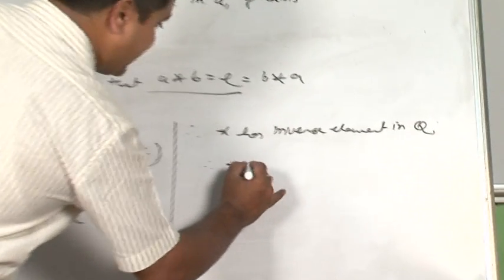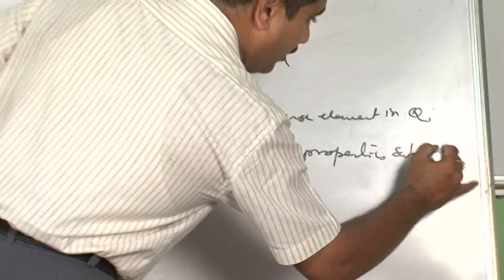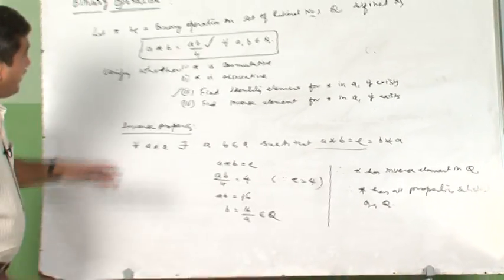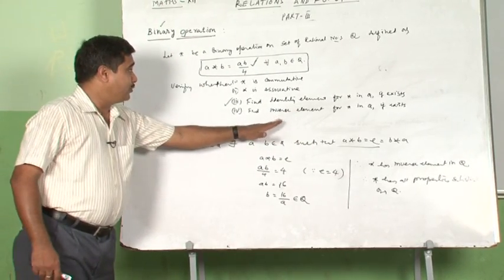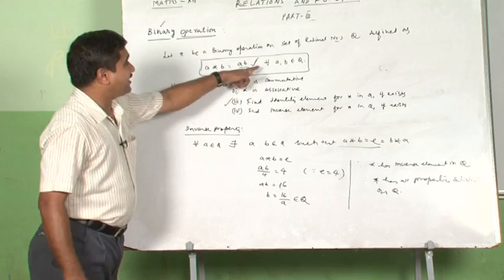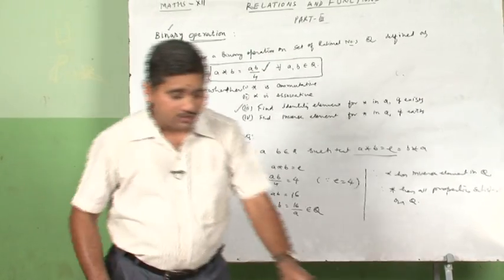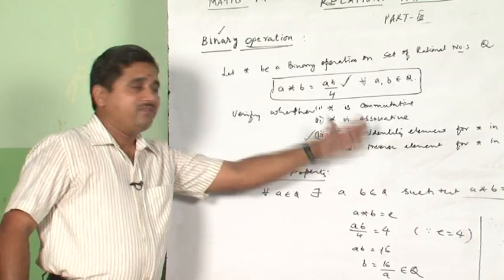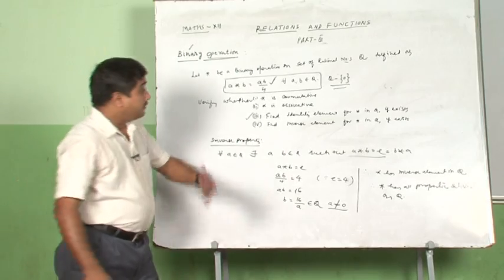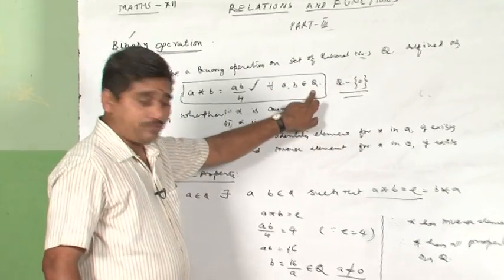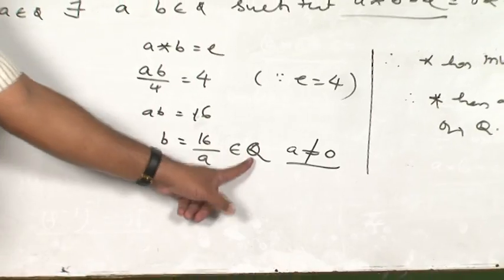Therefore, star satisfies all properties on Q. In this one problem we have proved commutative, associative, identity, and inverse properties. There is also closure property, but it need not be proved here because the problem already states that star is a binary operation — when star is given as a binary operation, closure is already assumed. Note that A must not equal 0, because if A equals 0 then the inverse element 16/A does not exist in Q.